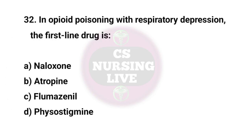Question No. 32. In opiate poisoning with respiratory depression, the first line drug is? Right answer is D. Amiodarone.